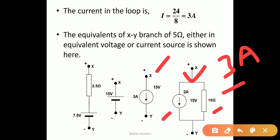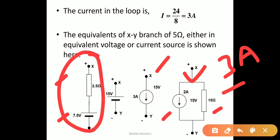We know that the current in the XY branch is 3 amperes, so we can represent this with a parallel circuit. A current source with a parallel resistance is the general representation, while a voltage source with a series impedance is another form. This is a representation of a voltage source with series impedance, and this is a representation of a current source with a parallel resistance.